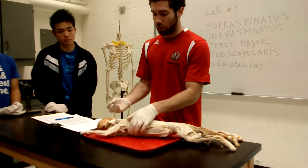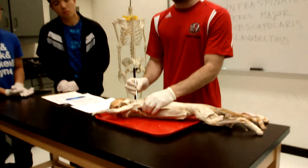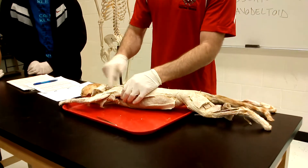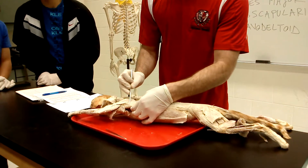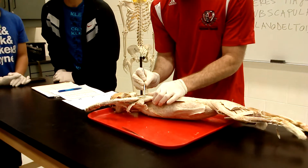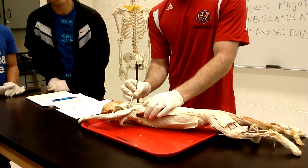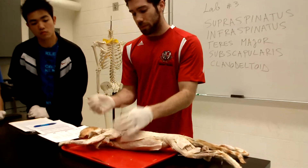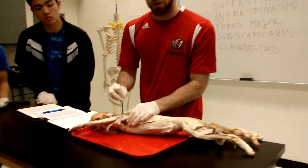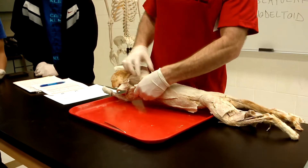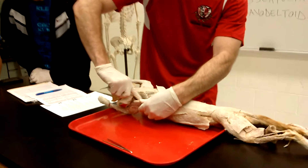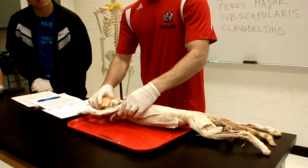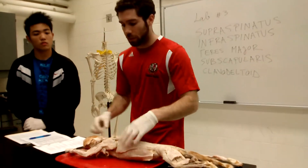We have supraspinatus — 'supra' referring to superior, above the spinous process of the scapula. Below that is infraspinatus. Lateral to that on the side is teres major. Coming out of the spinous process is spino deltoid, which sits between supraspinatus and infraspinatus. On the inside wall of the scapula we have subscapularis — think of 'subterranean' meaning underground; subscapularis is kind of under the scapula.